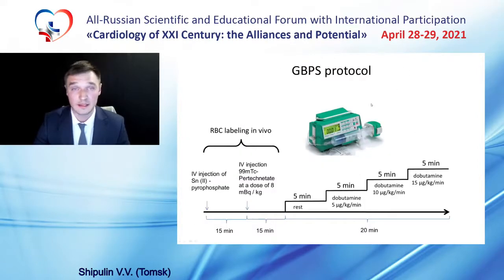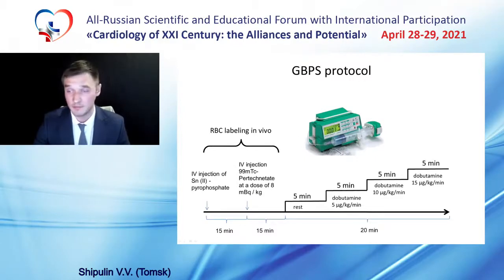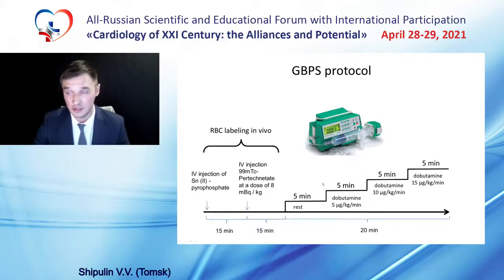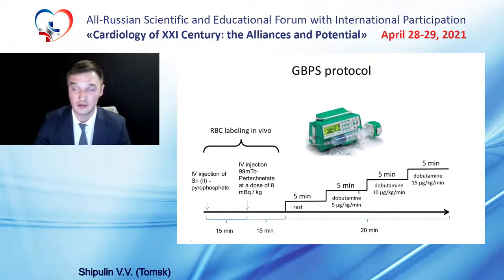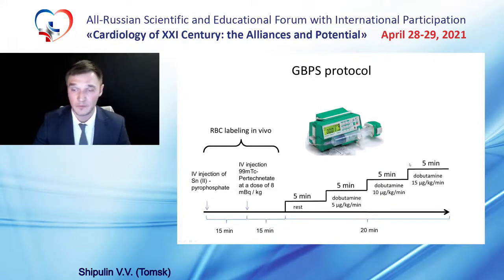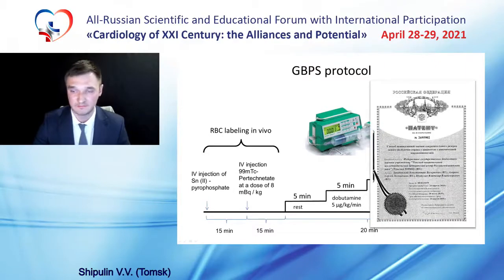The stress gated blood pool SPECT protocol is presented here. After exercise labeling, there were four continuous acquisitions — first at rest and then during increasing doses of dobutamine from 5 to 15 micrograms per kilogram per minute. A patent on this method has been received.